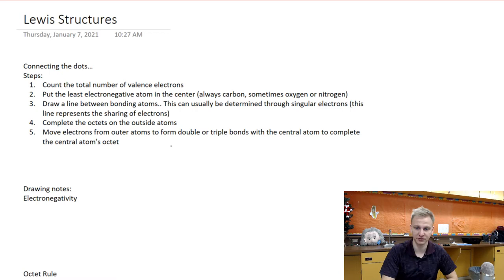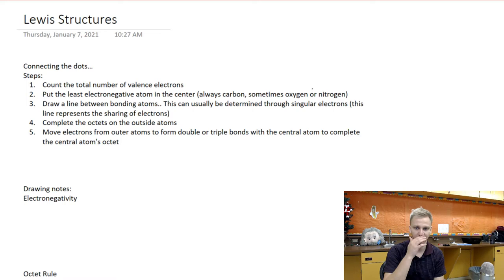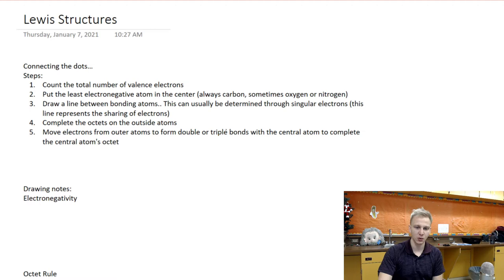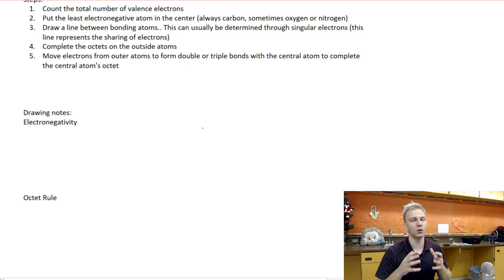A couple of steps: first, count the total number of valence electrons. Second, put the least electronegative atom in the center — always carbon, sometimes oxygen or nitrogen. We'll talk about what is deemed the central atom and what are the terminal atoms. Draw a line between bonding atoms; we'll explain what a bond is and how many electrons it's worth. Complete the octets, and move electrons from outer atoms to form double or triple bonds with the central atom to complete its octet.